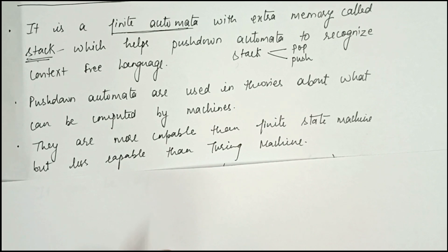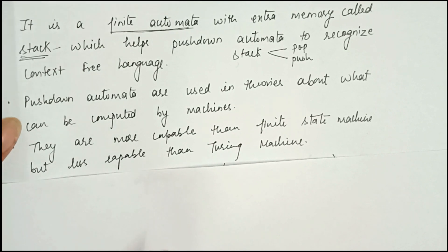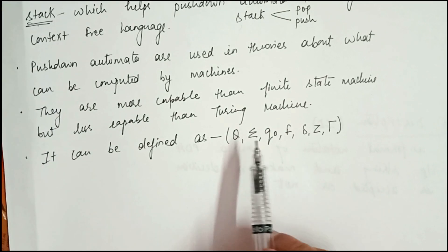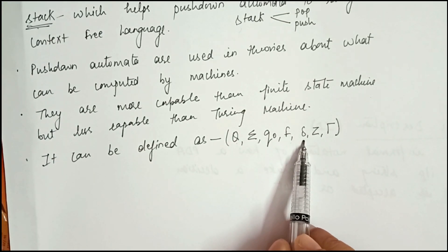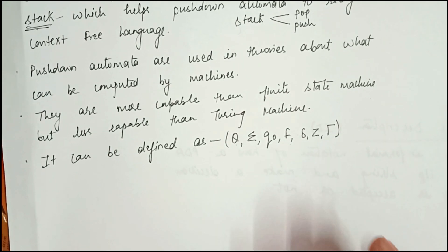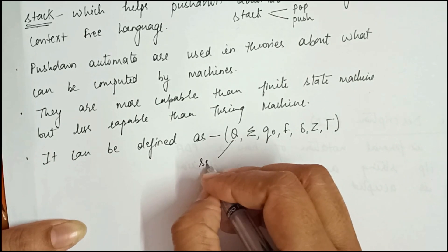Now, how does a PDA work and what symbols are used while performing operations on the PDA? A PDA can be defined by some symbols: Q, Σ, q₀, F, δ (transition function), Z, and Γ (Tau/top). Here Q is the set of states.